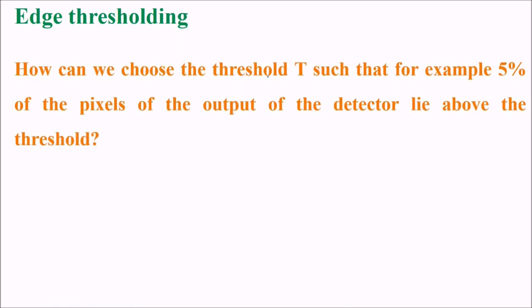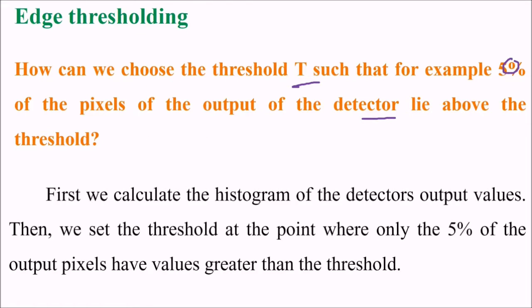Edge thresholding. How can we choose the threshold T such that, for example, 5% of the pixels of the output of the detector lie above the threshold? We calculate the histogram of the detector output values. Then we set the threshold at the point where only 5% of the output pixels have values greater than the threshold.